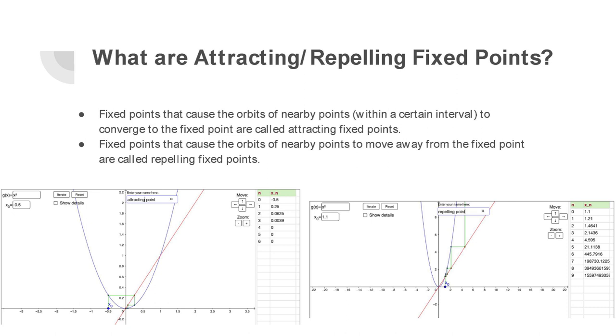Fixed points and repelling points are kind of self-explanatory. Attracting points attract orbits. Here we can see we start at x naught 0.5, and it attracts the point into 0,0. That's where your fixed point is, so that's an attracting fixed point.